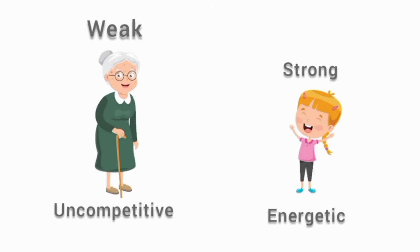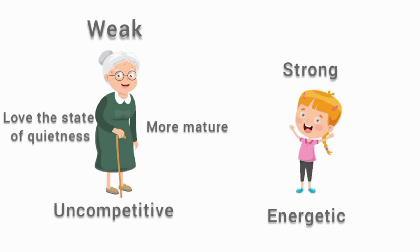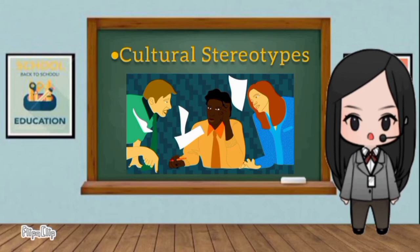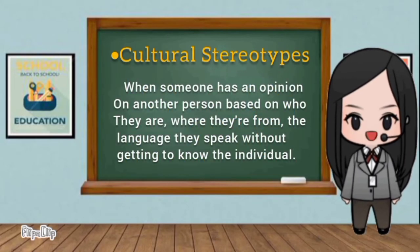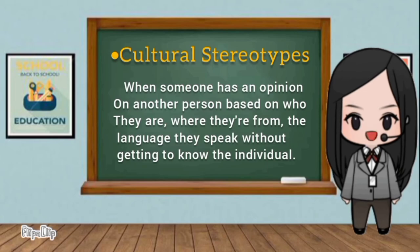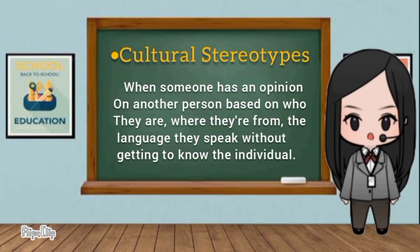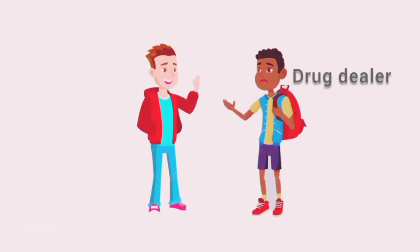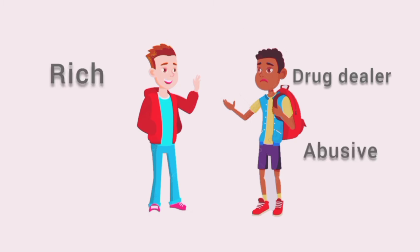Some people say that old people love the state of quietness, and others say that the older you get, the more mature you become. The last one is cultural stereotyping. Cultural stereotyping is when someone has an opinion on another person based on who they are, where they're from, or the language they speak without getting to know the individual. For example, Asians are extremely intelligent. Another is black Americans noted as drug dealers and abusive people, while the white ones are rich and smart.